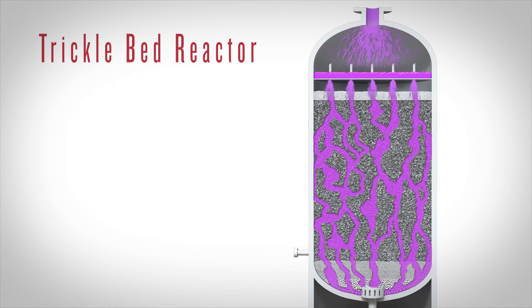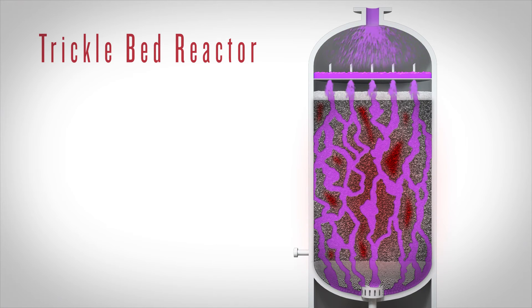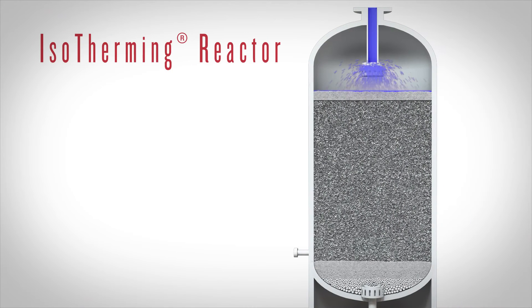A trickle bed reactor depends on near-perfect feedstock distribution throughout the catalyst bed to maximize reaction efficiency and avoid overheating and coking. In an isotherming reactor,